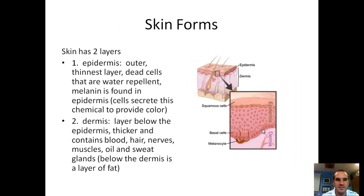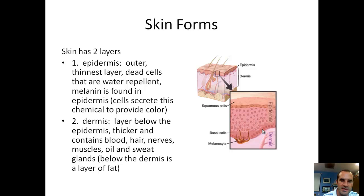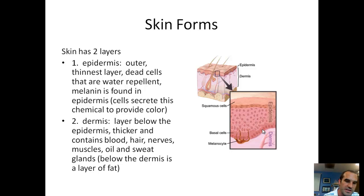Skin has two layers: epidermis and dermis. The epidermis is the outer thinnest layer — it's composed of dead cells, is water repellent, and contains melanin, which gives your skin color. The melanin cells secrete a chemical to provide color, and the function of that color is to help absorb UV light rays — so the melanin in your epidermis acts as a natural sunscreen.